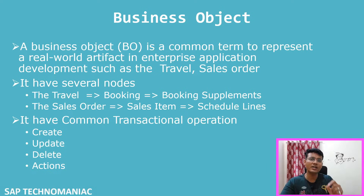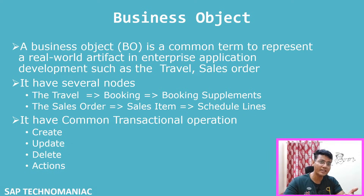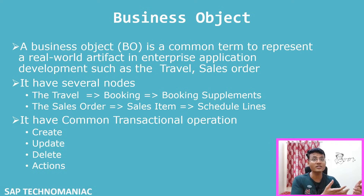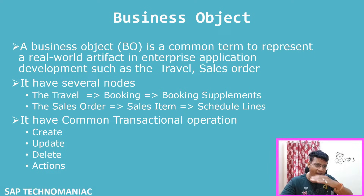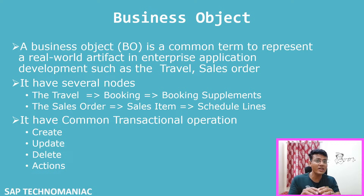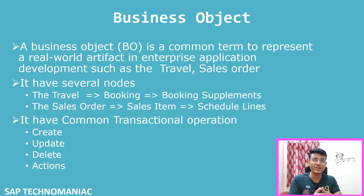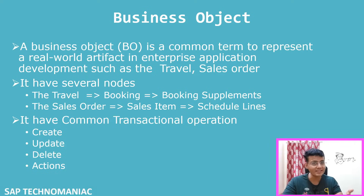Any business object is always available in the form of a hierarchy with several nodes. For example, in the sales order case we have the sales order, then sales order line item, then schedule line item. In the travel case we have travel, then bookings, then supplements. Similarly for purchase order, we have purchase order, line item, then sub-line item. Within that entire business object, we can perform several actions like create, update, delete, release, or approve.